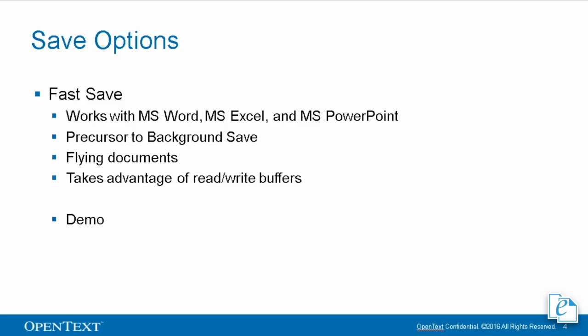In background save, it just pops up a little bubble — it's not in your way. You're able to continue editing the document while the bubble is at the forefront, and it also has some additional checks and balances for your saves. We'll go over that later. Again, with fast save you will see the flying documents dialog, and it also takes advantage of the read-write buffers for performance.